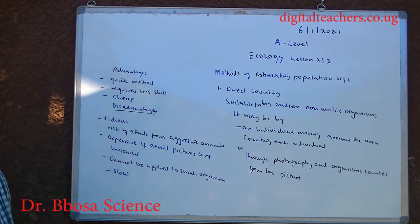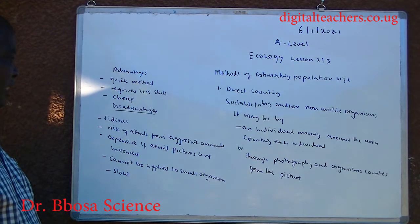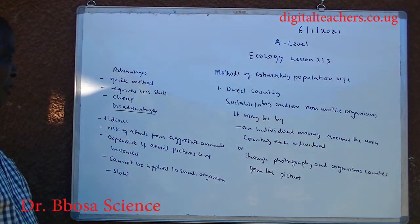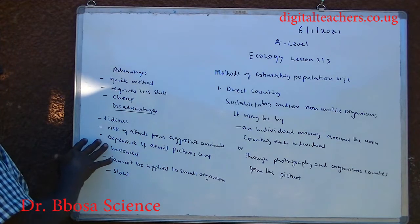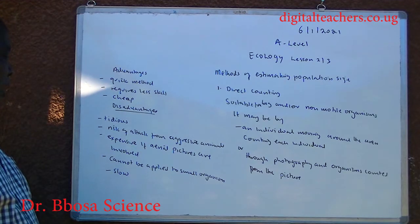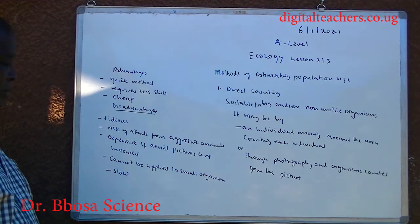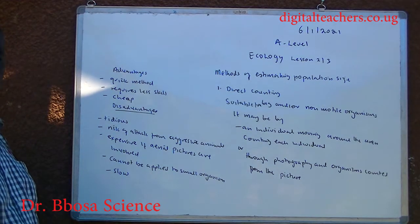Disadvantages of direct counting: it is tedious, you may be exposed to risks of attack from aggressive animals, it is expensive if using aerial pictures, and it may not be suitable for small organisms.